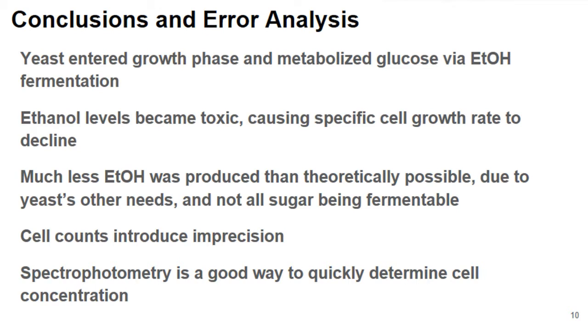Much less ethanol was produced than theoretically possible based on what Balling would predict in his mathematical models. This is because these yeast cells are not only using glucose for ethanol fermentation. They have other requirements such as dividing and all the biomass required for dividing, as well as the fact that all of the sugar present in our solution wasn't necessarily dextrose, which is the D form of glucose, which is the form that glucose can actually ferment via ethanol fermentation and generate ethanol. Because of this, we saw much lower rates of conversion than what we would have otherwise expected.